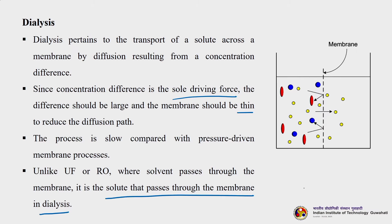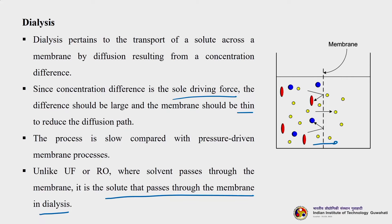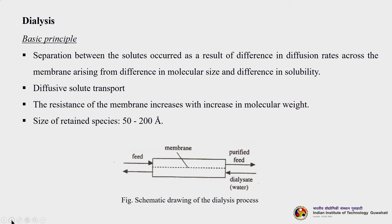Three types of solutes are shown here. The small solutes (yellow) are permeating through the membrane, whereas the large solutes (blue and red) are getting retained on the surface of the dialysis membrane by virtue of their sizes. Separation between solutes occurs due to differences in diffusion rates arising from differences in molecular size and solubility. This is a schematic of the dialysis process where feed flows in one direction and dialysate (water or buffer solution) flows in reverse — a counter-current arrangement.